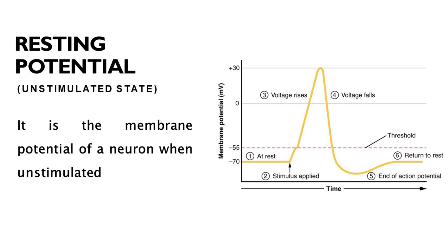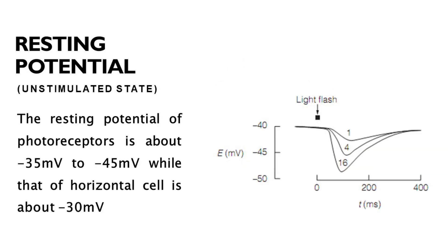Resting potential is the cell's membrane potential when unstimulated. Neurons return to rest after every change in the membrane potential. The resting potential of photoreceptors is about minus 35 millivolts to minus 45 millivolts, while that of horizontal cells is about minus 30 millivolts. In the resting state, photoreceptors are depolarized.